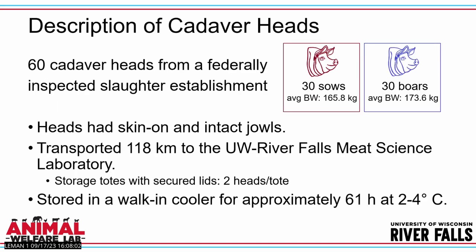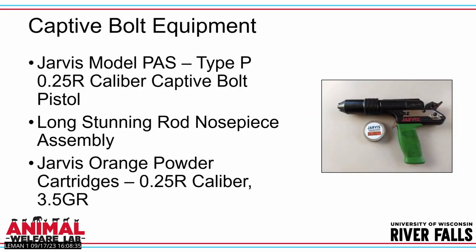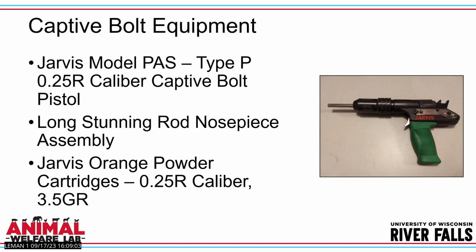We obtained 60 cadaver heads from a federally inspected slaughter establishment: 30 from sows averaging 166 kilograms and 30 from boars averaging 174 kilograms. Heads were collected with skin and jowls intact, transported to the UW River Falls meat laboratory, and held at 2–4°C for about 60 hours. Each head received a single captive bolt application using a Jarvis pistol-type captive bolt with a long stunning rod nose piece and orange powder cartridges of 3.5 grain — the manufacturer's recommendation for animals of this size and the most powerful combination available for this device. The bolt travel distance was 76.2 millimeters.